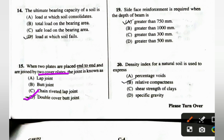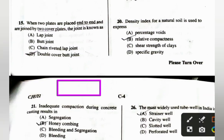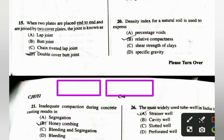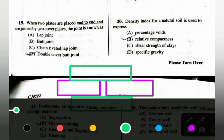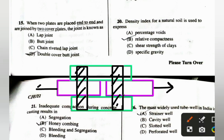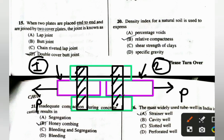When two plates are placed end to end and joined by two cover plates, the joint is known as a double cover butt joint. In a double cover butt joint, two plates are joined with one cover plate on each side (C1 and C2). If only one cover plate is used, it is called a single cover butt joint.